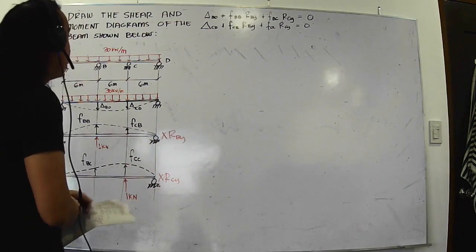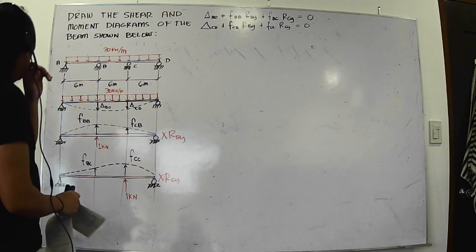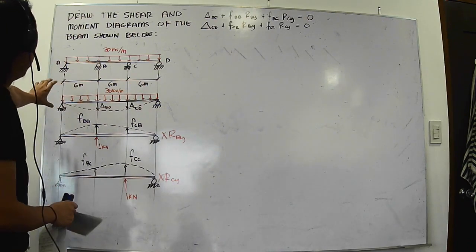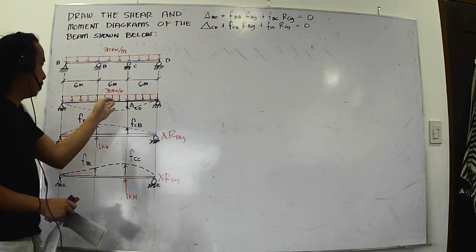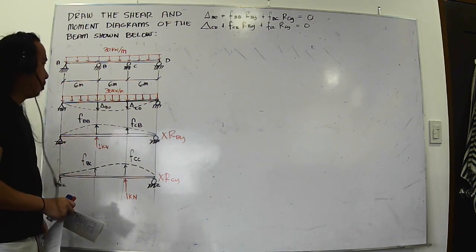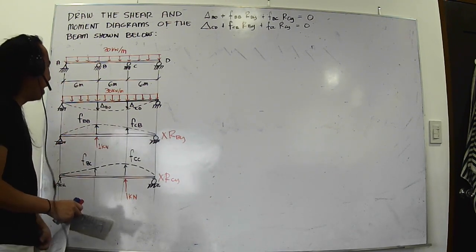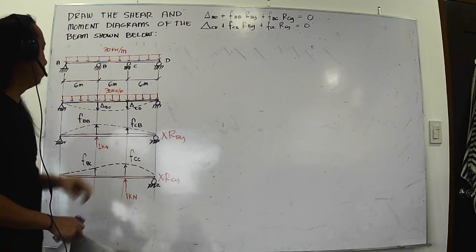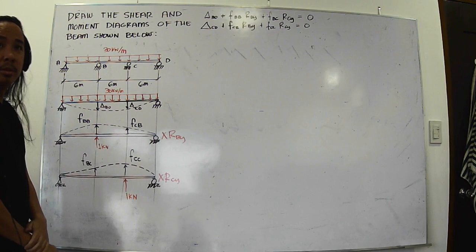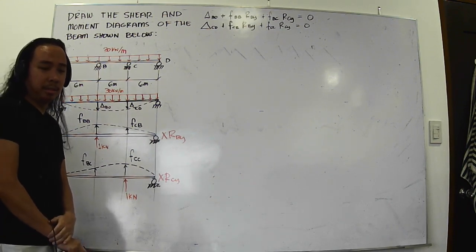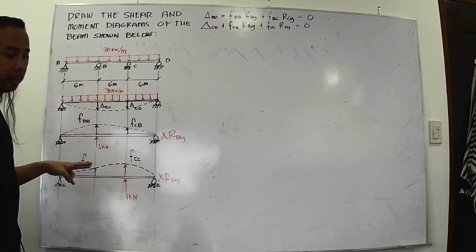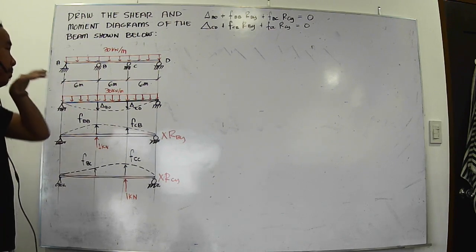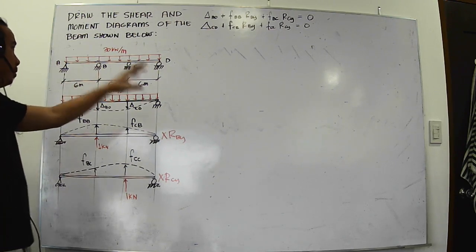Now we need to solve for the deflections. Both supports were released. We need to find delta_bo and delta_co. You can think about using the conjugate beam method.